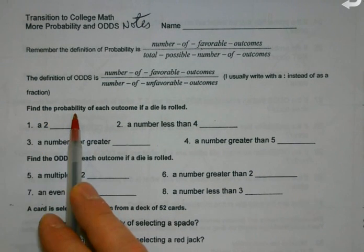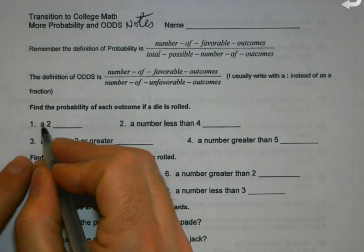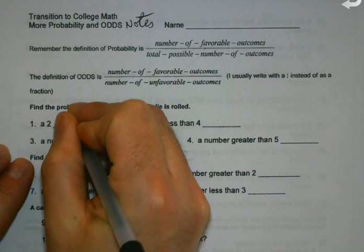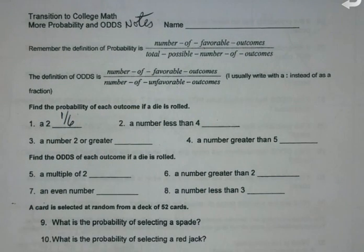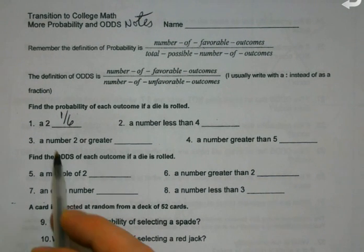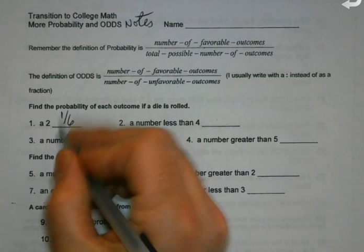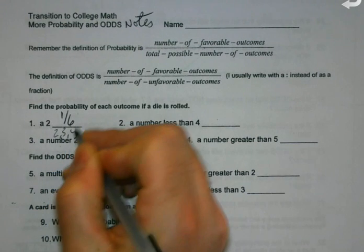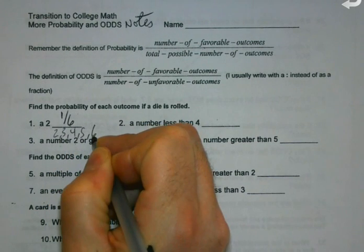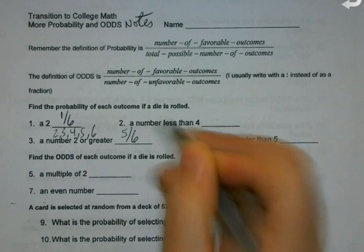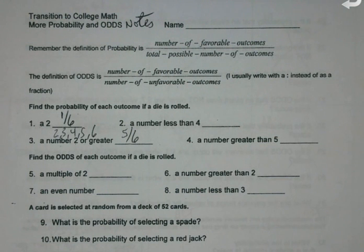Probability stuff just like we've been doing. So for instance, a 2. Probability is favorable over total, 1 out of 6. And we went into great detail with this yesterday, so we won't do a ton of these. A number that's 2 or greater - 2, 3, 4, 5, or 6 - means there's 5 out of 6. Six possibilities when I roll a die, 5 of them are what I want.